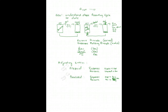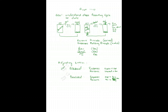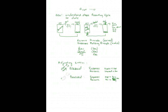For prepaid items, cash happens first and recognition on the income statement happens later. For accrued items, recognition on the income statement happens first, and cash happens later.